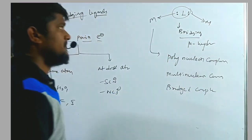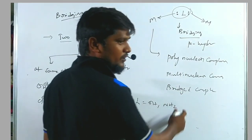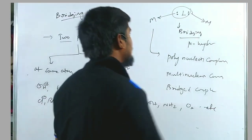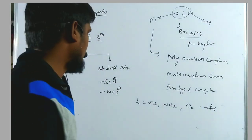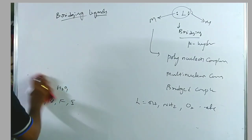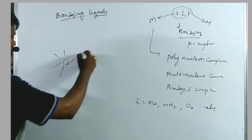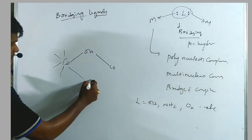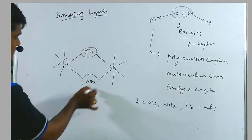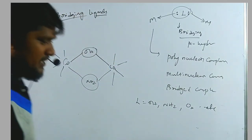The best examples of bridging ligands are L = OH or NH₂, sometimes hydroxo, imido, O₂, etc. For example, cobalt-OH-cobalt and cobalt-NH₂-cobalt — here OH is one bridging ligand and NH₂ is another bridging ligand. This is the classification about bridging ligands.